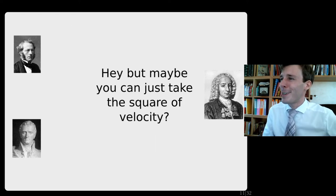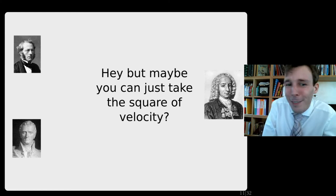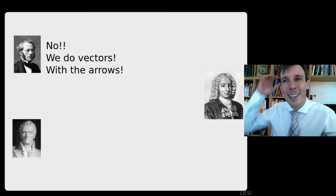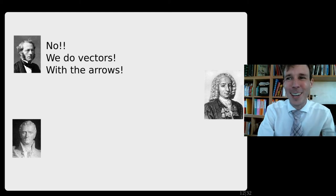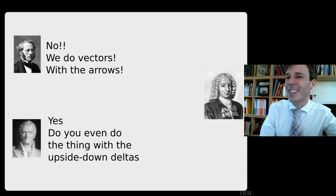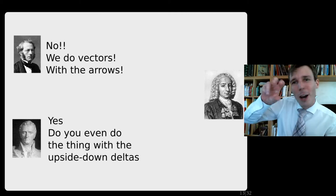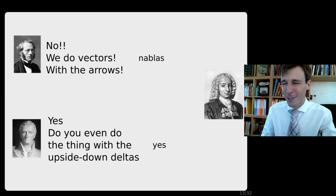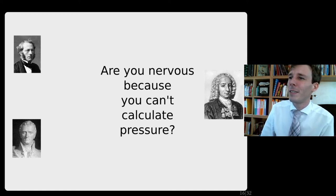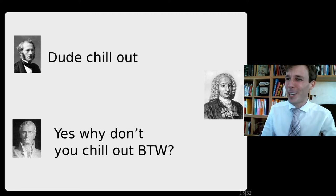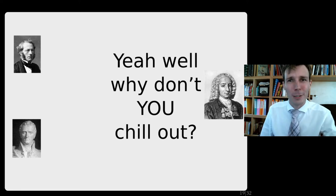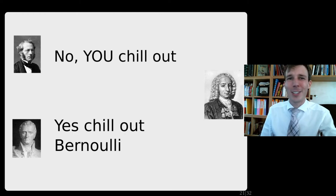And so Bernoulli says, 'But maybe you can just take the square of velocity.' Of course, Navier and Stokes are pretty angry. Stokes says, 'No, we do vectors with the arrows. It's a three-dimensional equation.' And Navier says, 'Do you even do the thing with the upside-down deltas? Nablas.' Bernoulli says, 'Are you nervous? Because you can't calculate pressure.' Then Stokes says, 'Dude, chill out.' And they exchange more 'chill out' comments.